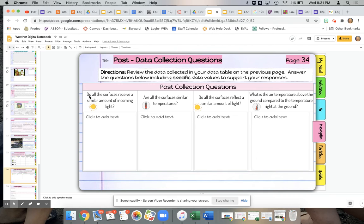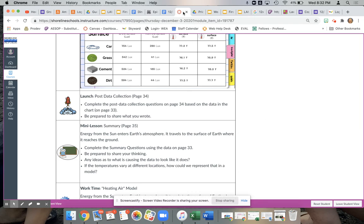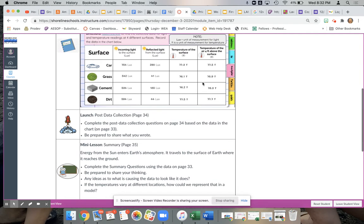So it says here, do all the surfaces receive a similar amount of incoming light. So we would go back and take a look at that. So we are going to be looking at incoming light. Do they all have a similar amount? And I would say no.